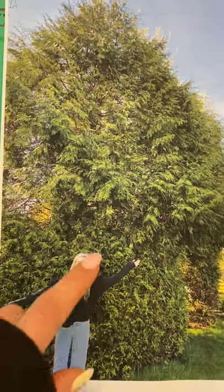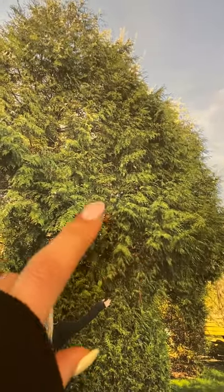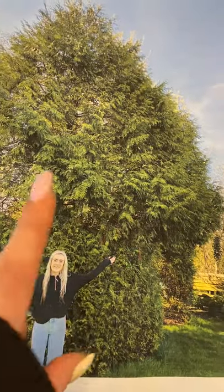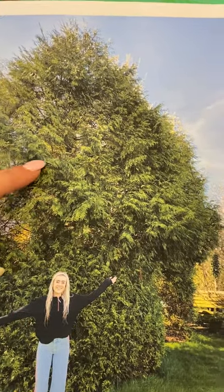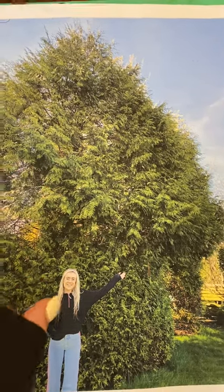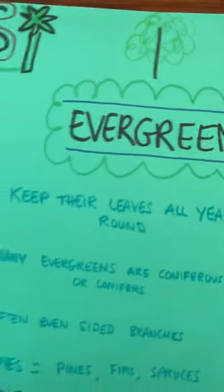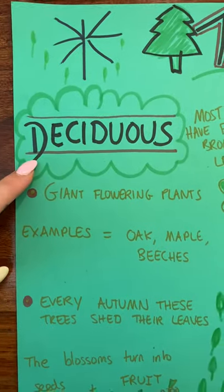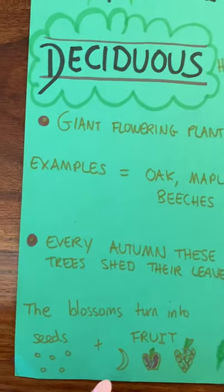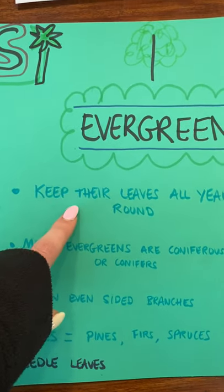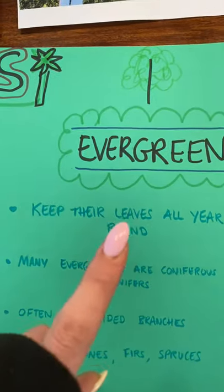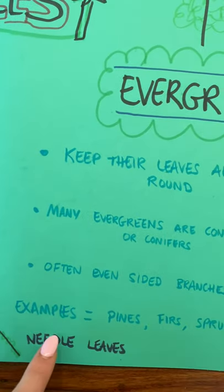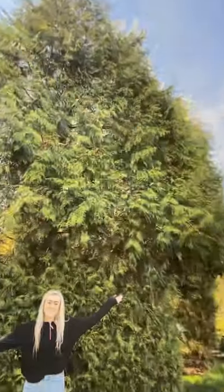Here is an example of an evergreen in my garden. Now as you can see, the leaves themselves are like needles. And this stays green all year round. This is an example of a conifer. So we have deciduous trees that lose their leaves in autumn and have fruit or seeds, and we have evergreen trees that keep their leaves all year round and are often coniferous with needles as leaves. And here is an example.